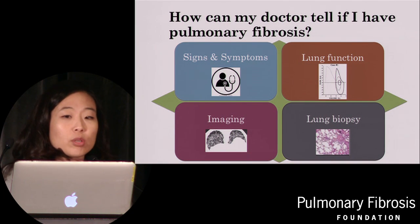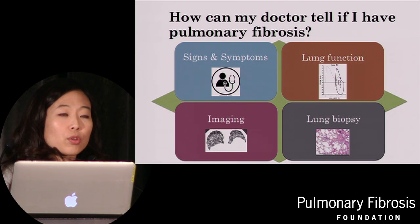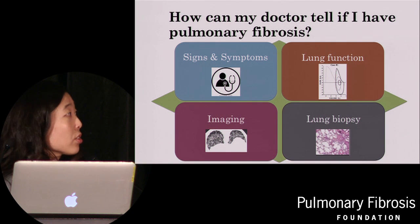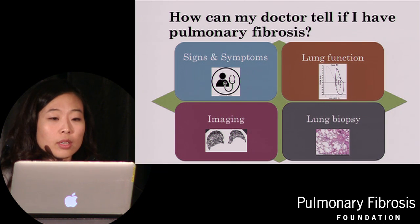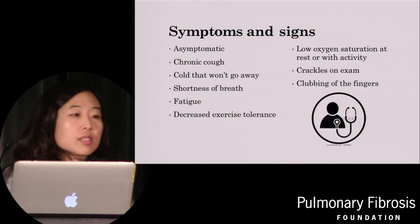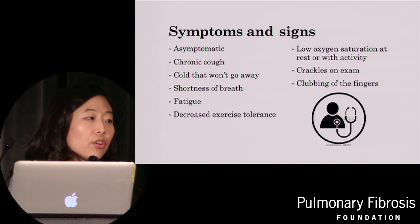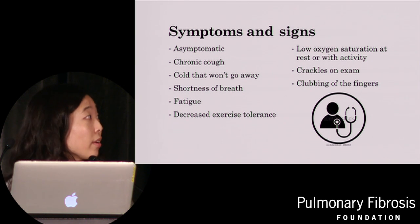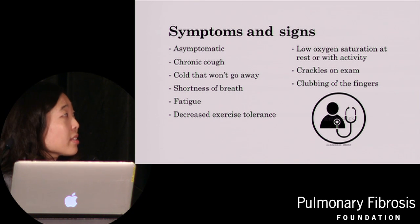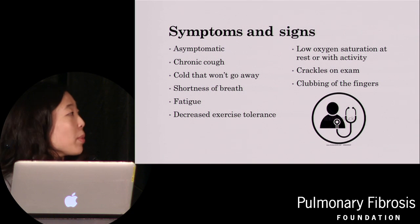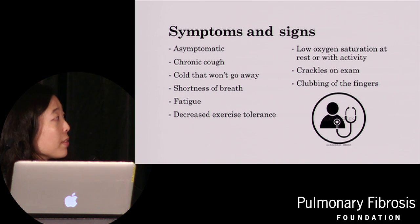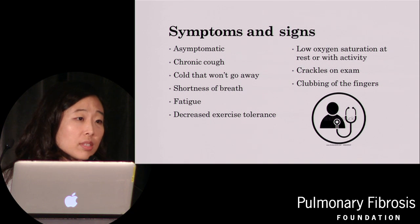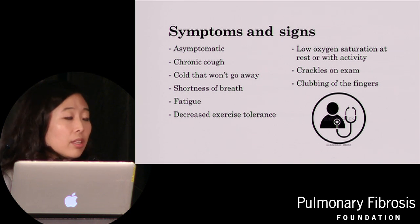How can doctors tell if you have pulmonary fibrosis? It is actually challenging for a variety of reasons. The first category of tests is symptoms and signs. The problem is they are really nonspecific — there's no cardinal feature that says this patient has pulmonary fibrosis. Symptoms can range from being asymptomatic, to a chronic cough, a cold that just won't go away, progressive shortness of breath, fatigue, and decreased exercise tolerance. Signs in the doctor's office include a low oxygen saturation on a pulse oximeter at rest or with activity, crackles heard on examination, or a phenomenon called clubbing of the fingers.